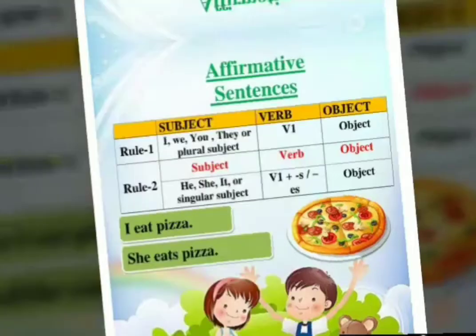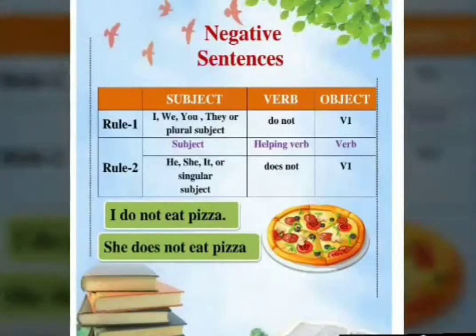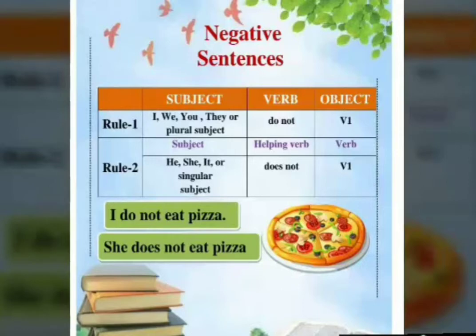Now we will see how we will convert negative sentences. For making negative sentences, with I, we, you, they, or with a plural subject, we will use do not, then first form of verb, then object. For example: I do not eat pizza. And keep in mind, with he, she, it, or with a singular subject, we will use does not, then first form of verb, then object. For example: she does not eat pizza.